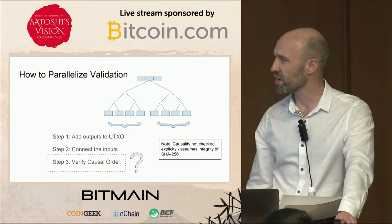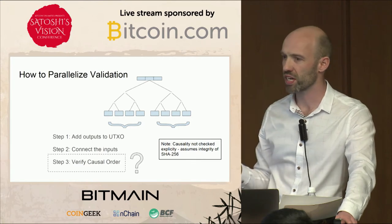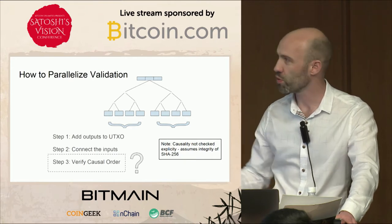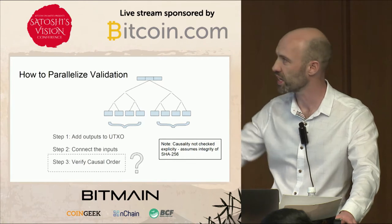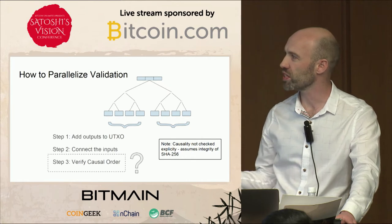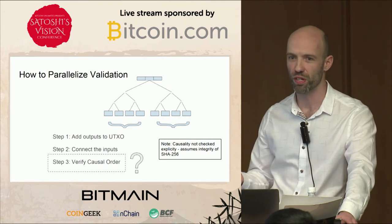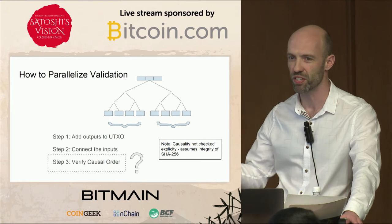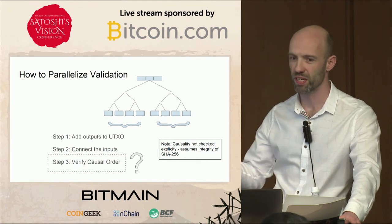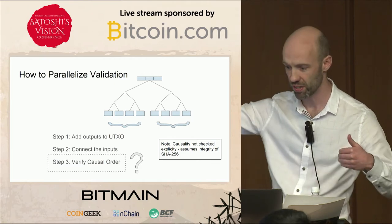Right now you'd have to do a step three if you wanted to do this, because those two steps don't check the ordering I talked about. You could have transactions in the Merkle tree where the one that spends the other is placed before it — to the left in the Merkle tree. The only reason you would do step three is so that the old way would also still work, but if you're going to do it the parallel way it's completely pointless. And it's linear — you can't parallelize it because it's a causal chain, a time-dependent thing.